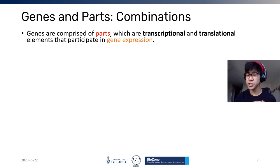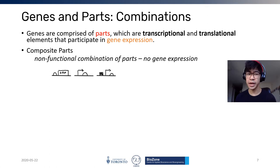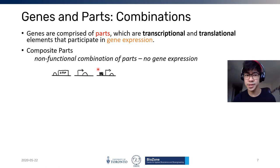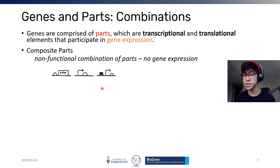The Collins toggle switch illustrates parts being put together to form a useful system. There are three categories for how parts are assembled. First, composite parts are non-functional combinations of parts with no gene expression — for example, an RBS and ORF without a promoter, or a promoter and RBS without an ORF. These are non-functional because they can't encode anything yet. However, people often combine a promoter and RBS together since that pairing is always needed with an ORF to get expression.